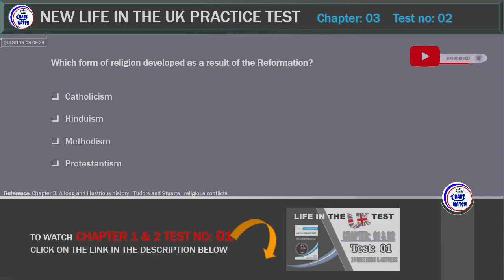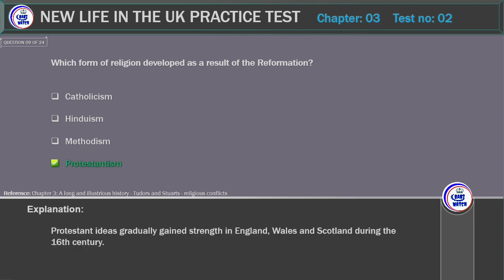Which form of religion developed as a result of the Reformation? Options: Catholicism, Hinduism, Methodism, Protestantism. Correct answer: Protestantism. Explanation: Protestant ideas gradually gained strength in England, Wales and Scotland during the 16th century.